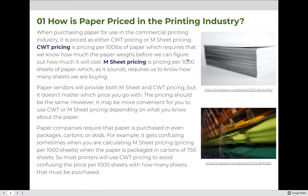When purchasing paper for use in the commercial printing industry, it is priced as either CWT or M-sheet pricing. CWT pricing, also known as hundredweight pricing, is pricing per 100 pounds of paper, which requires that we know how much the paper weighs before we can figure out how much it will cost. M-sheet pricing is pricing per 1,000 sheets of paper. Paper vendors will provide both, but it may be more convenient to use one or the other depending on what you know about the paper.